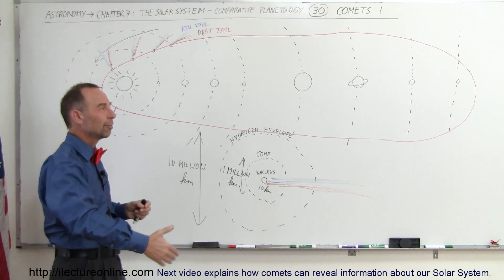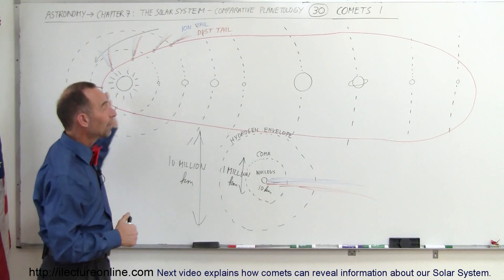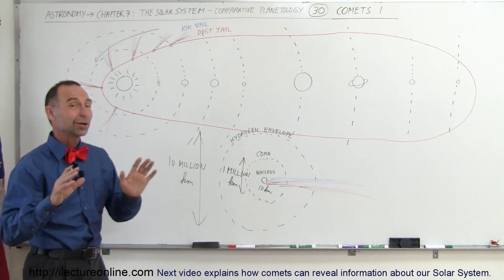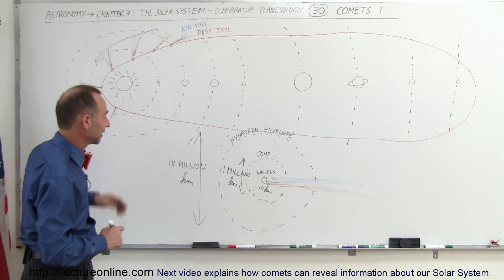In other instances, comets have been on this path for thousands of years. They come by, and then we probably will not see them again for many thousands of years. We will no longer be here when those comets come back, obviously.